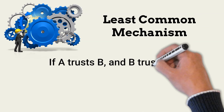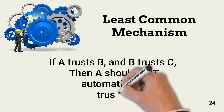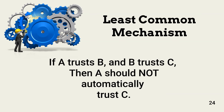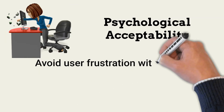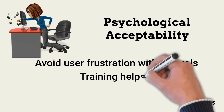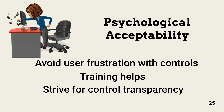Least common mechanism limits scopes of trust. The more we share components between users, the higher the risk something bad will happen. A big control is preventing transitive trust: if A trusts B and B trusts C, A should trust C is not zero trust — A and C must also explicitly trust each other. Psychological acceptability is about whether users will accept security limitations. Controls must not be so onerous that users ignore or try to bypass them. Training helps users understand the importance of managing risk, but architecture design should limit the impact on user workflow. As far as possible, controls should be hidden from users.